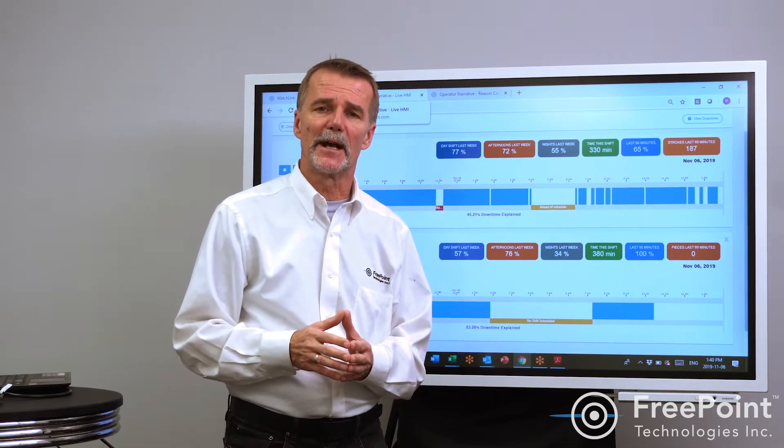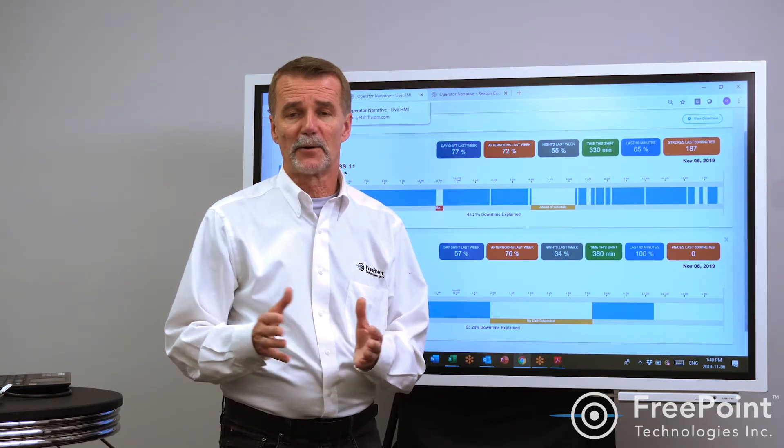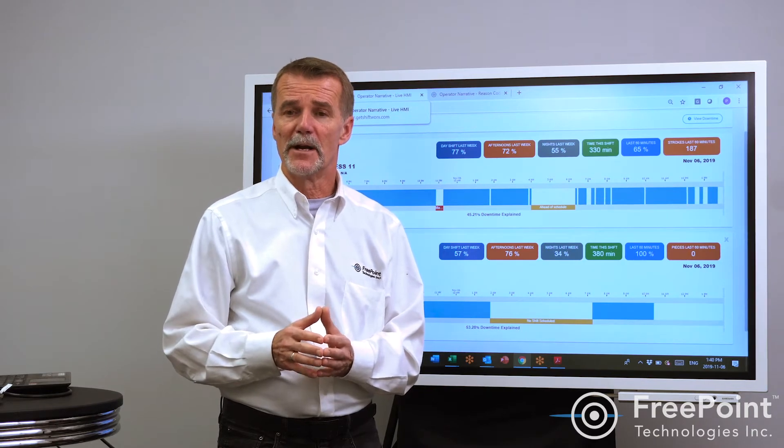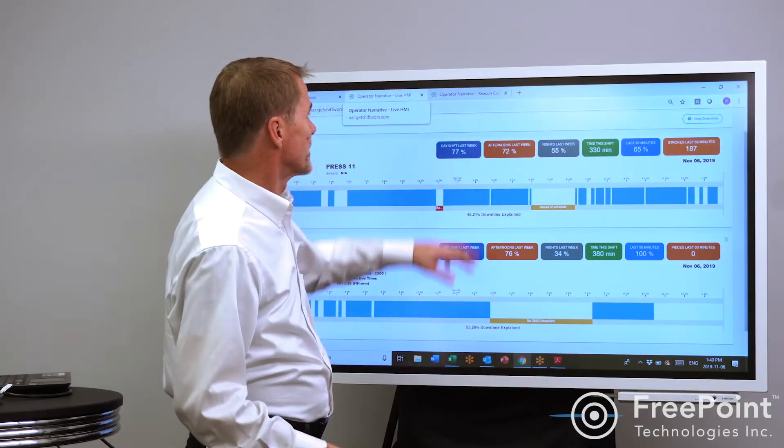Unscheduled reasons for being down make that red. And perhaps managerial reasons make them blue and quality reasons make them another. So if you make every category a different color when you ask for a downtime report, you'll get something like this.